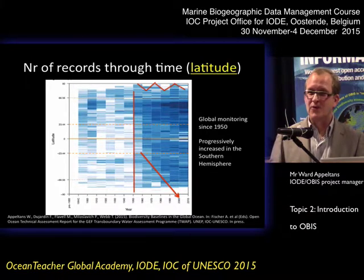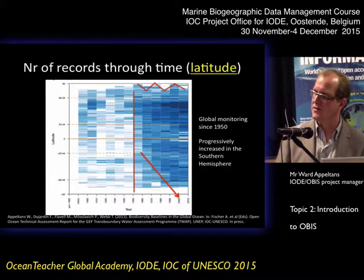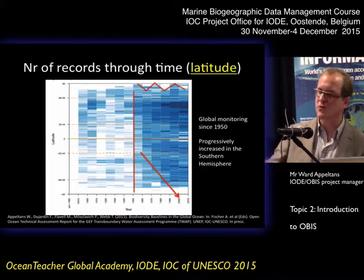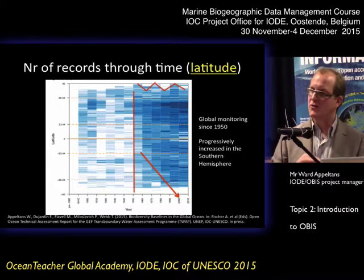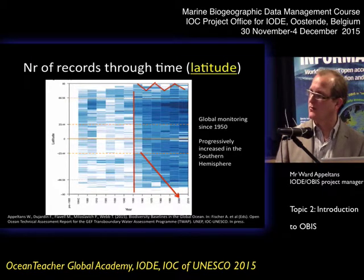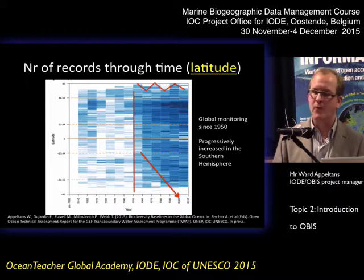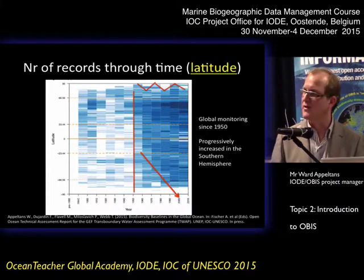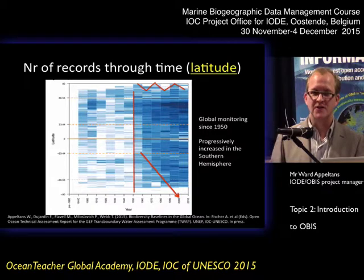But it's a work in progress. Here I present a graph of the decades — on the x-axis you see decades from 1900 up to 2010, and you have latitude zero, the equator. Really, global monitoring started in the 1950s and progressively increased in the southern hemisphere. In the Arctic, strangely, it goes up and down.